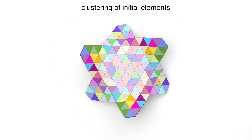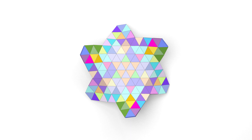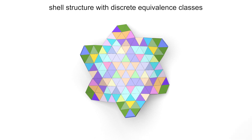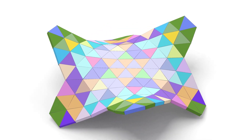We cluster initial shell elements in the structure and recursively perform cluster merging operations to reduce the number of clusters. We then generate a template for each cluster and use it to replace the original element to model a shell structure with discrete equivalence classes.